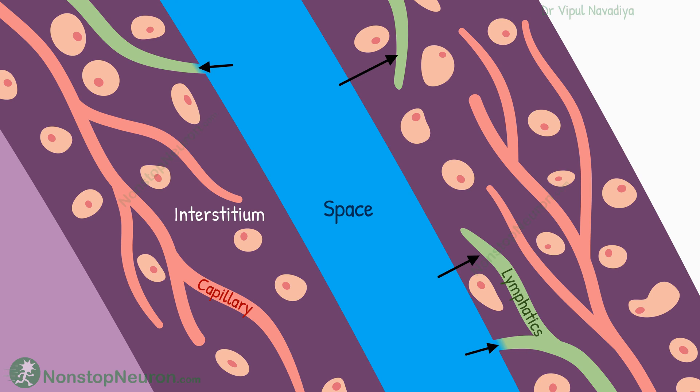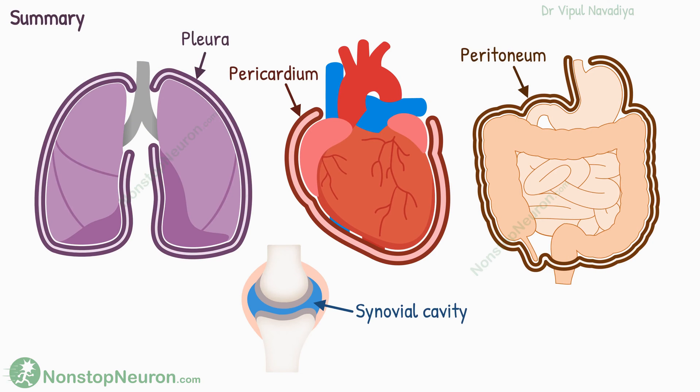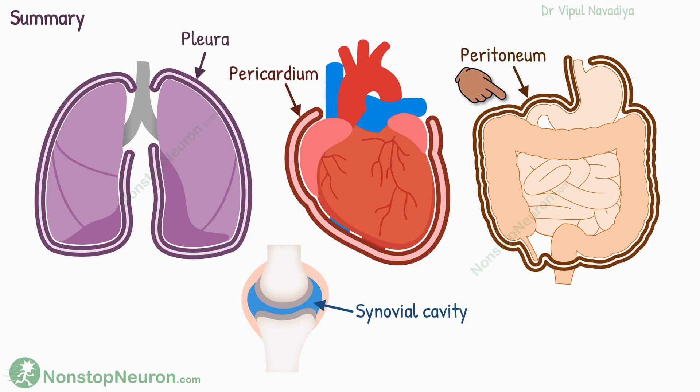So this was all about the potential fluid spaces. Now let's have a quick summary. The potential fluid spaces include the pleural cavity, pericardial cavity, peritoneal cavity, and synovial cavities.